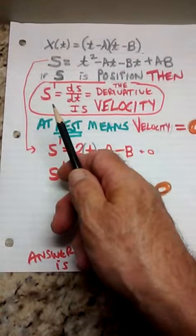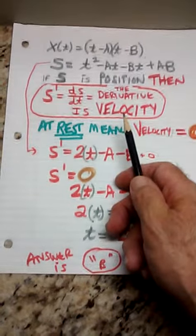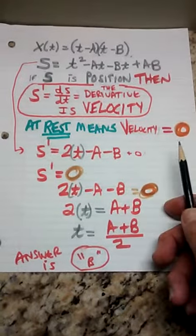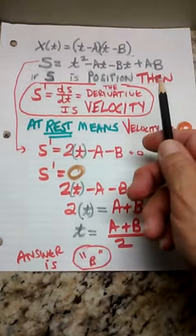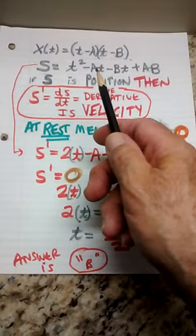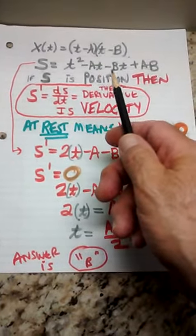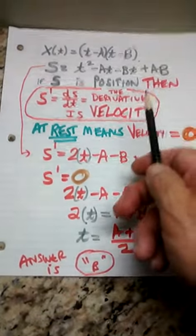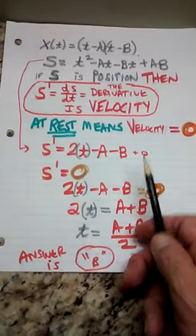When you take the derivative of the position you get the velocity. The word at rest means velocity equals zero. So I need to take the derivative of this expression. That would be 2t, minus a, minus b, plus zero. The derivative of a constant is zero because ab is a number.